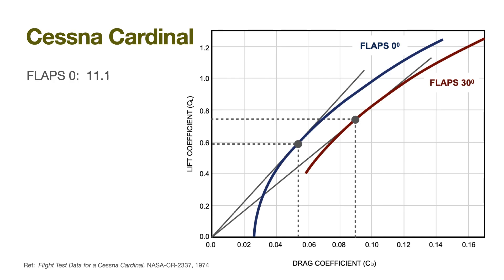Here is the drag polar curve generated for a Cessna Cardinal with flaps set at zero degrees. The lift-to-drag ratio using best glide airspeed is found by taking a line from the origin that is just tangent to the curve. In this case, we get a lift-to-drag ratio of 11.1. In other words, this aircraft should be capable of gliding 1,110 feet forward for every 100 feet of altitude loss.